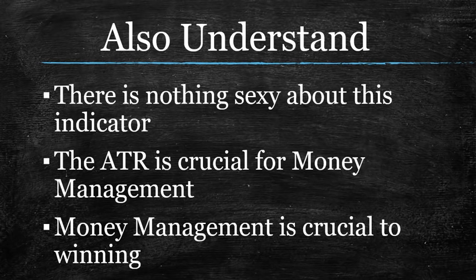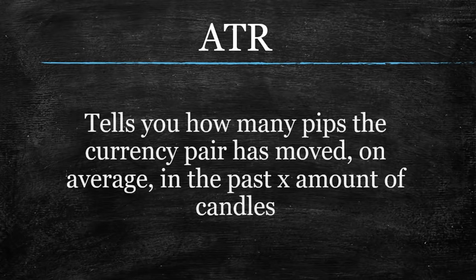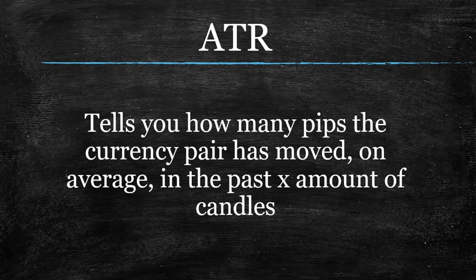So let's talk about what the ATR actually is. The average true range all it does is tell you how many pips a particular currency pair has moved, on average, in the past X amount of candles. The default settings on most platforms is 14 — so in the past 14 candles, on average from top to bottom, how many pips does this thing move? That's it. I'm going to go to my charts and show you how to set it up.